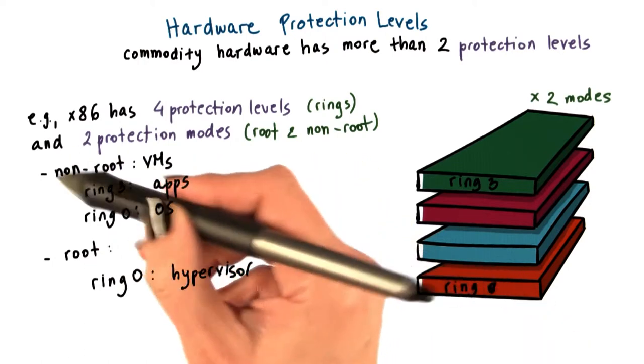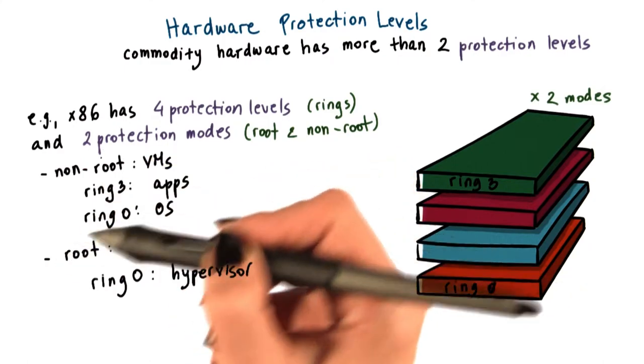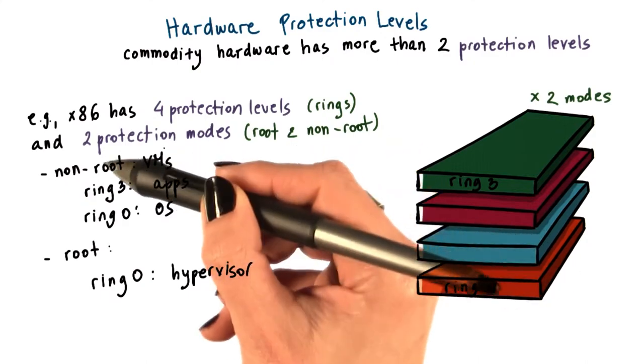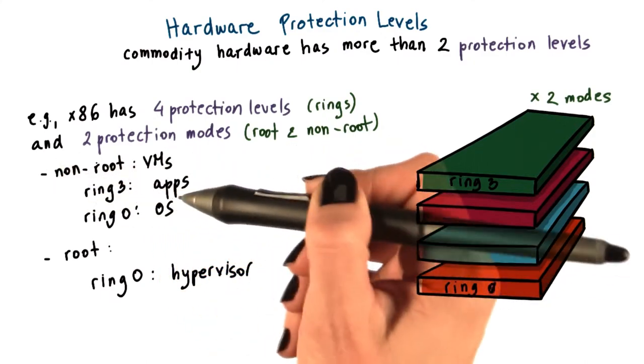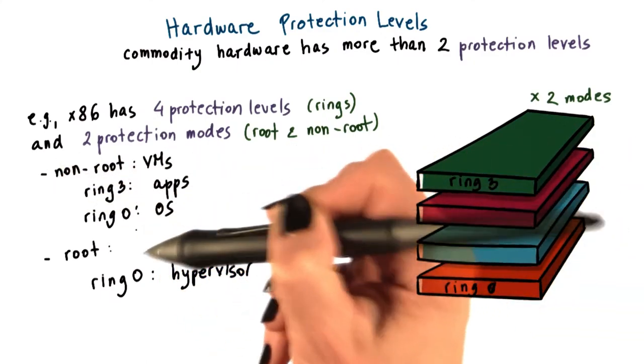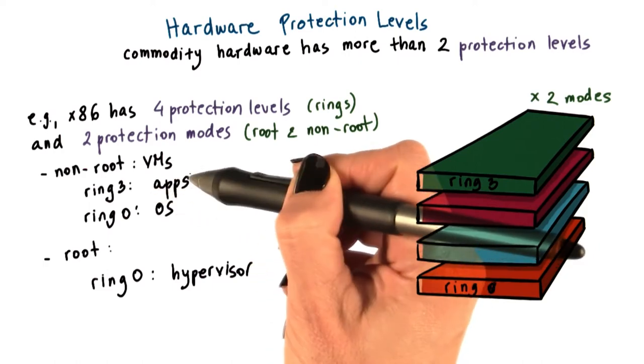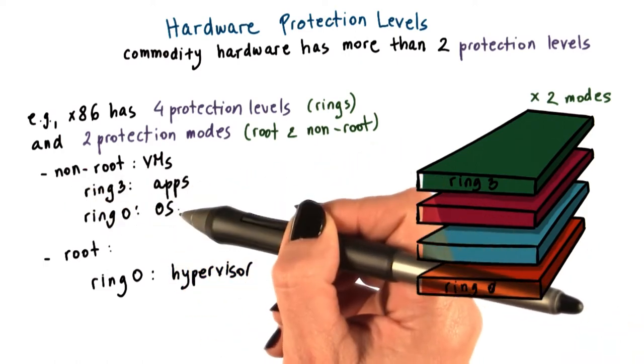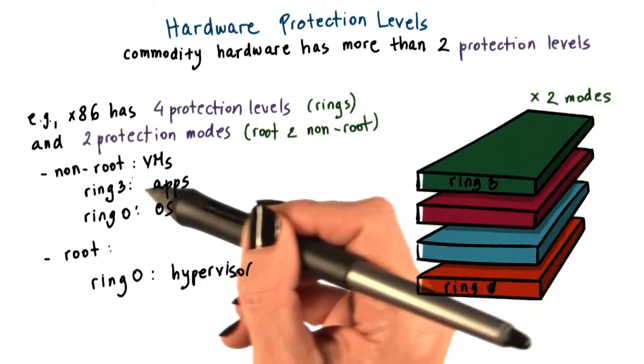In contrast, in non-root mode, certain types of operations are not permitted. So then the guest VMs would execute in this non-root mode. And they would have, as they did in native execution, their applications running in ring three and the operating system running at ring zero privileged level.